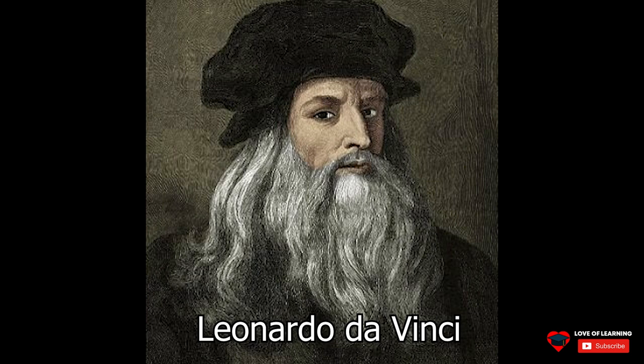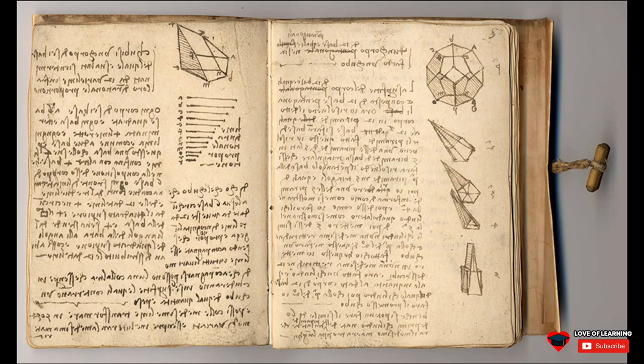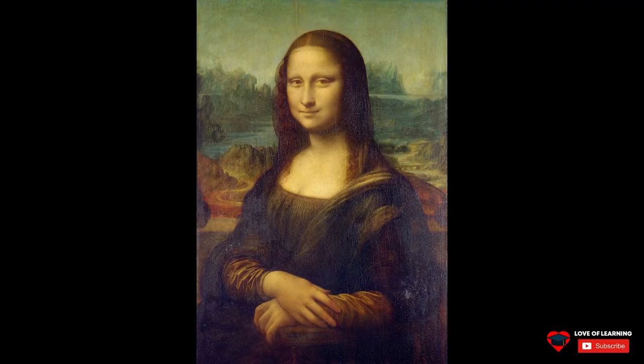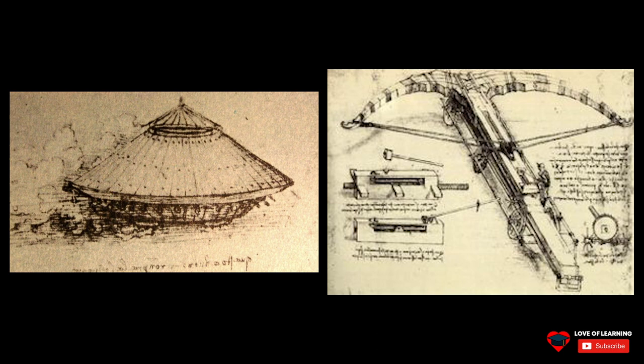One famous example of a curious person is Leonardo da Vinci. He was an Italian polymath of the High Renaissance who was active as a painter, draftsman, engineer, scientist, theorist, sculptor, and architect.